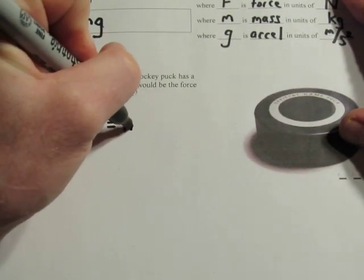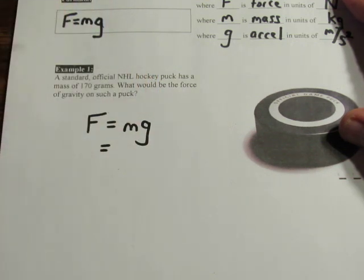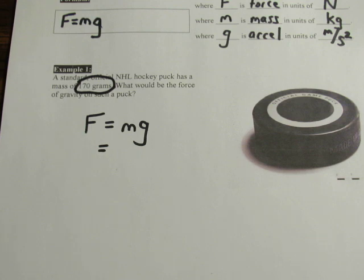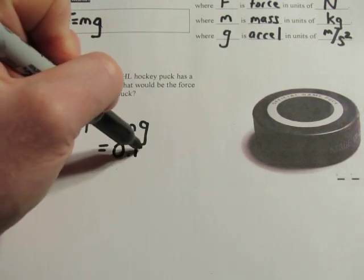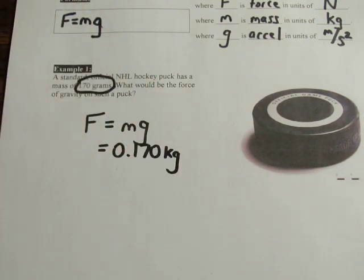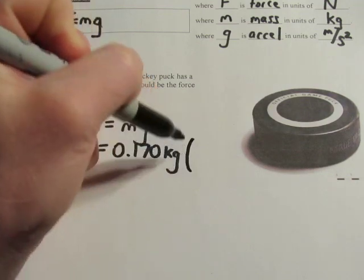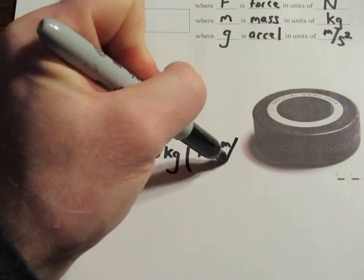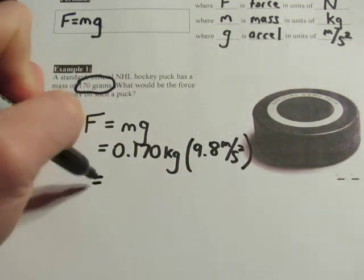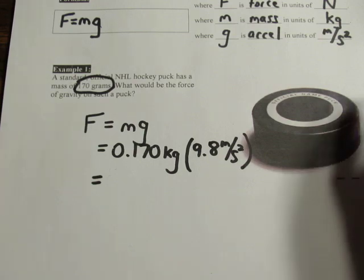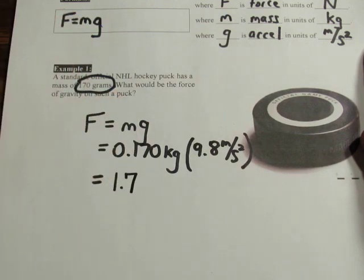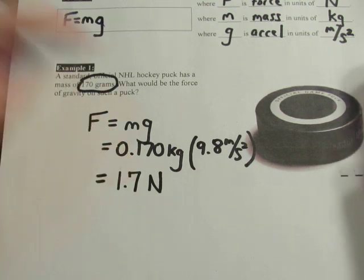As always, you write down your formula and a substitution line, but be careful because 170 grams is not standard metric units. It has to be in kilograms or else the calculation won't work. Remember there are a thousand grams in a kilogram, so 170 grams is 0.170 kilograms. The value for g is 9.8 meters per second squared. Multiply those on a calculator and the answer comes out to 1.666. I'll write 1.7 newtons just to round it to one place after the decimal.